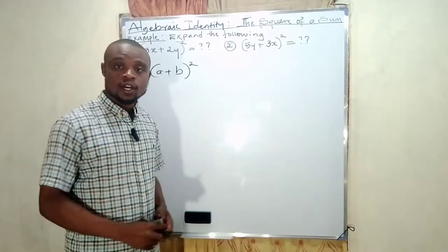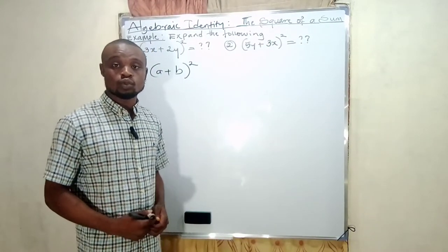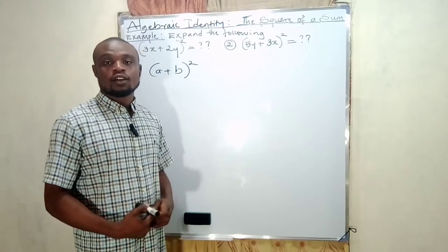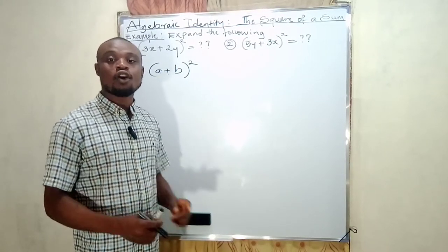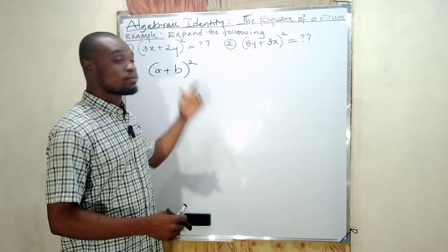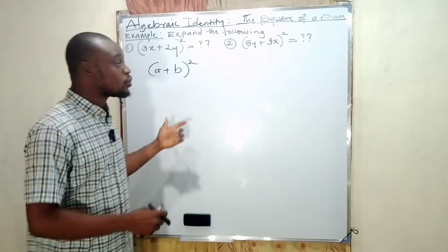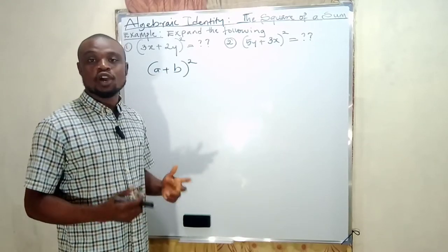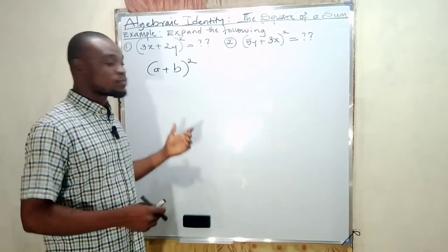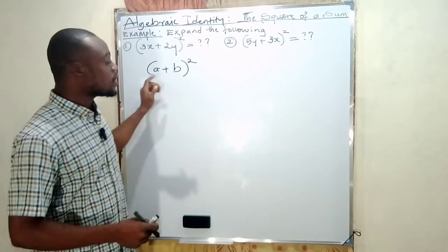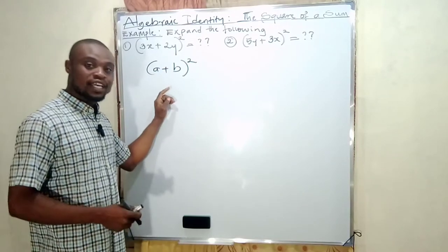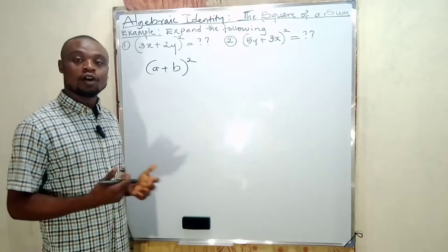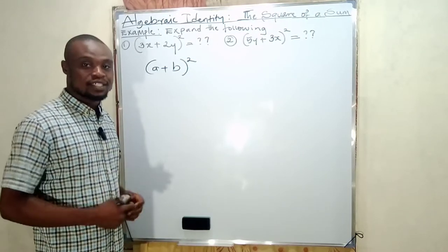Hello maths lovers, this is Ura. Today I'm going to be explaining the very first algebraic identity called the square of a sum. You can see it on the board using these examples. Particularly, the square of a sum is an expression like this: when you have (a + b) in brackets with a square.